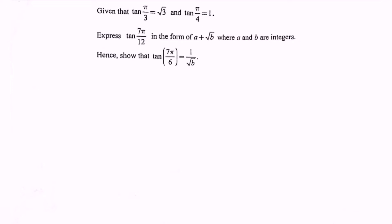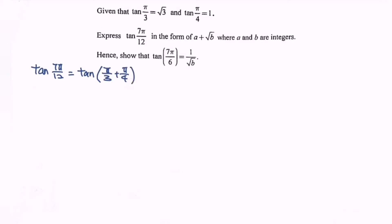Kindly relate the situation — we have tangent(π/3) and tangent(π/4). As we can see, tangent(7π/12) is equal to tangent of (π/3 + π/4). If we equate the denominators, it is equal to tangent of (4π + 3π)/12.